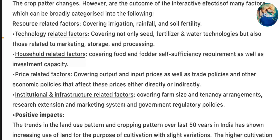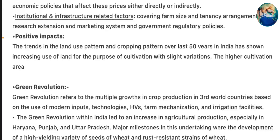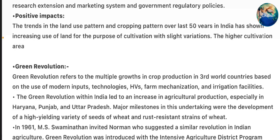Institutional and infrastructure-related factors covering farm size and tenancy arrangement, research, extension and marketing systems, and government regulatory policies. Positive impacts: The trends in the land-use pattern and cropping pattern over the last 50 years in India have shown increasing use of land for the purpose of cultivation, with the higher cultivation area.